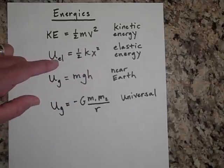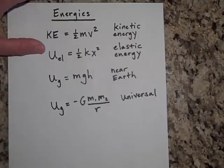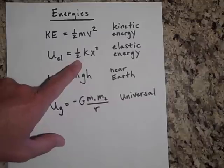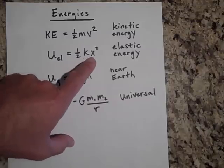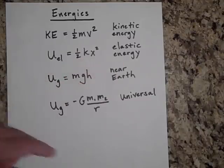And then there's elastic potential energy. That is, when you stretch a spring or compress it or you pull a rubber band back, there'll be some energy stored in that. And that's equal to one half the spring constant times X squared. That's called elastic energy.